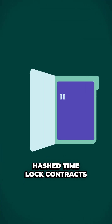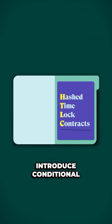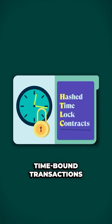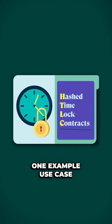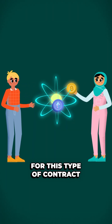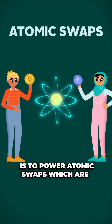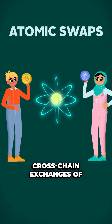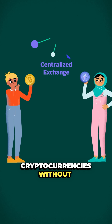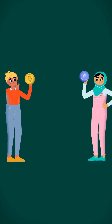Next, hash time lock contracts introduce conditional time-bound transactions. One example use case for this type of contract is to power atomic swaps, which are cross-chain exchanges of cryptocurrencies without third parties involved.